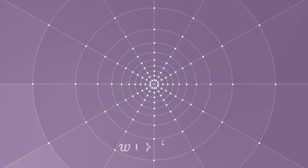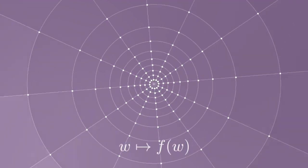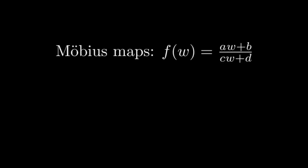Now let's discuss step two. We viewed the plane obtained by projection as the complex plane, and applied a complex transformation to it. The general complex transformation that corresponds to space-time symmetries are Mobius maps. These are transformations of the form f(w) equals aw plus b over cw plus d, where a, b, c and d are complex numbers.